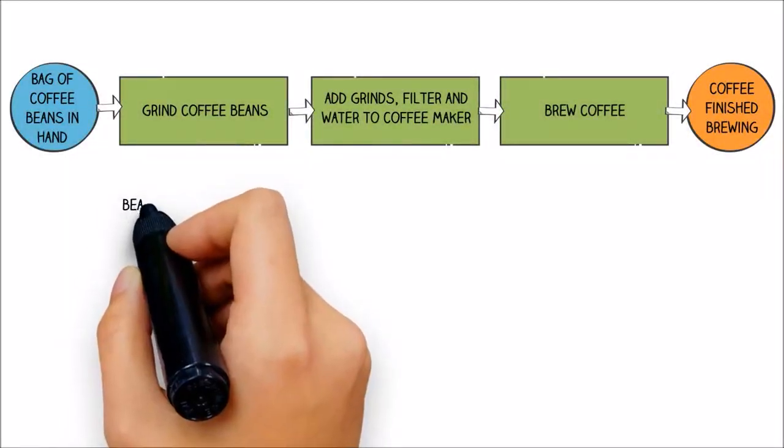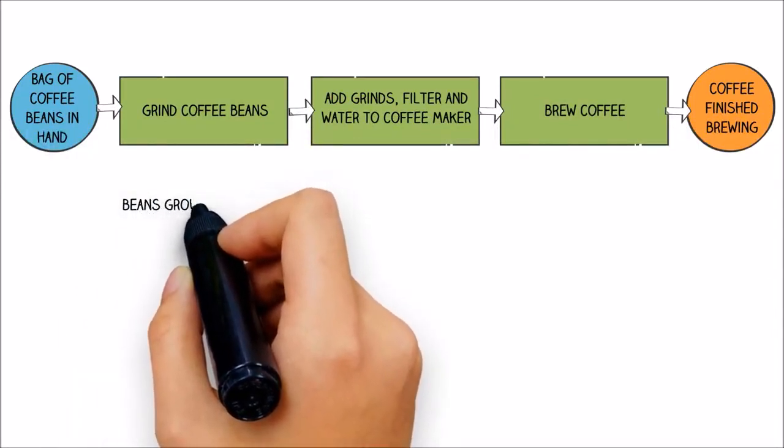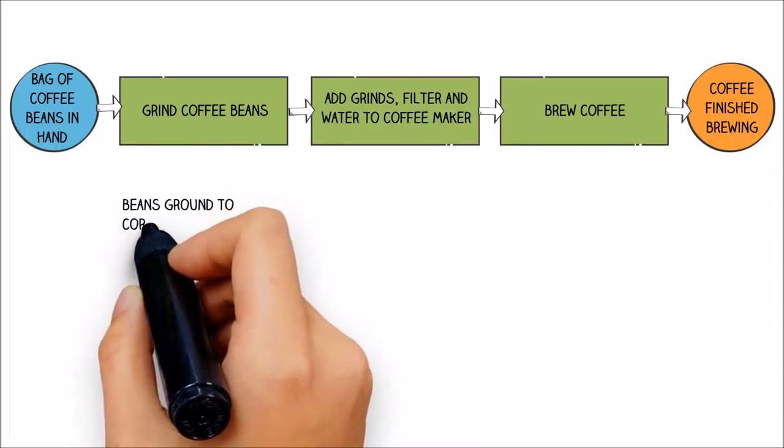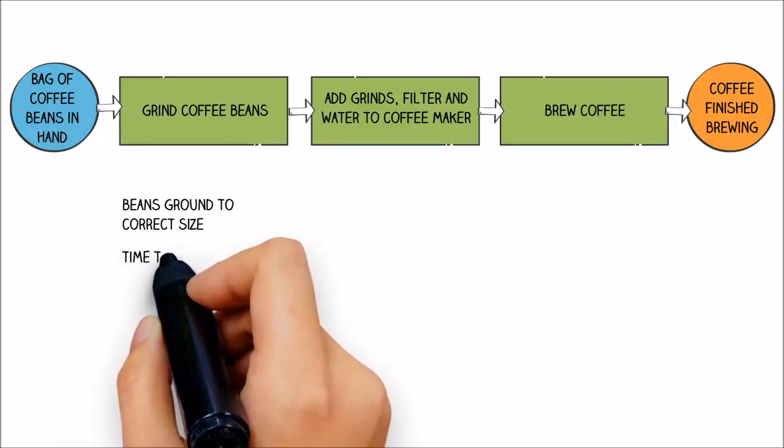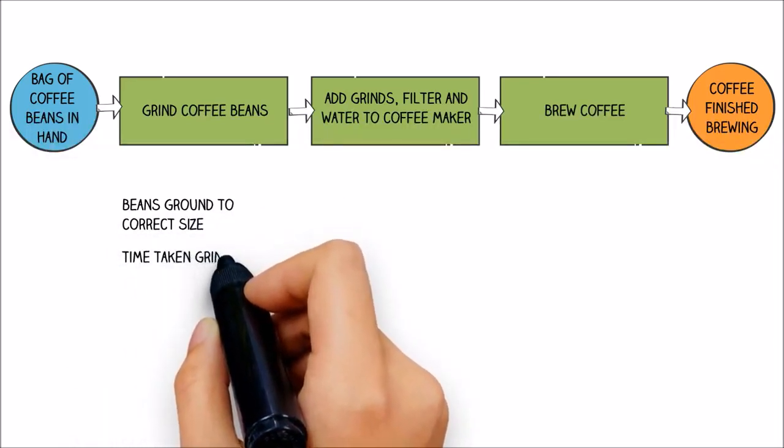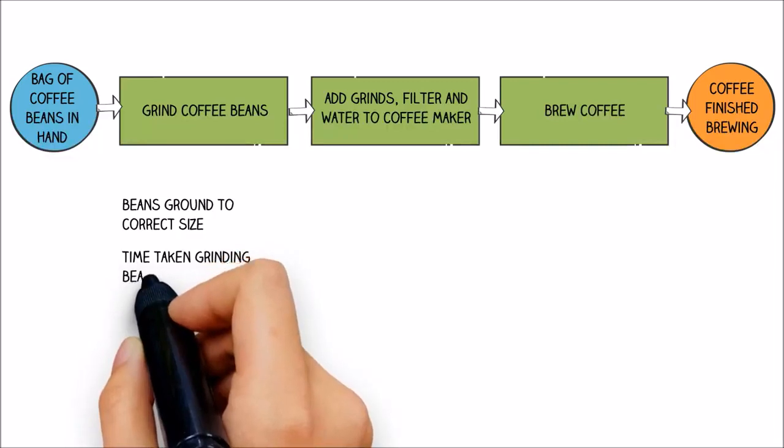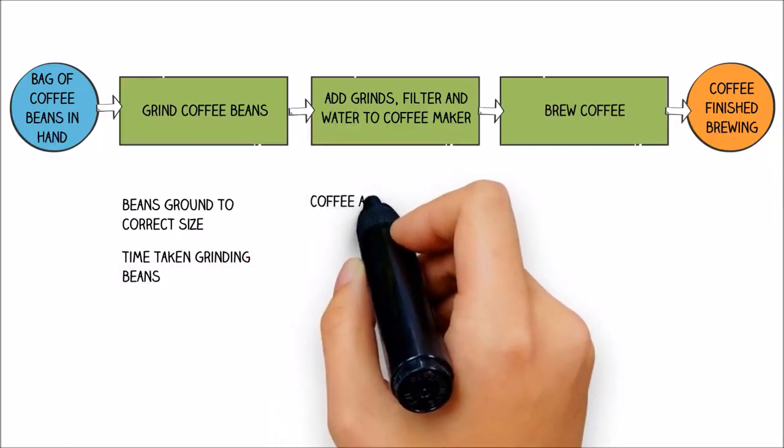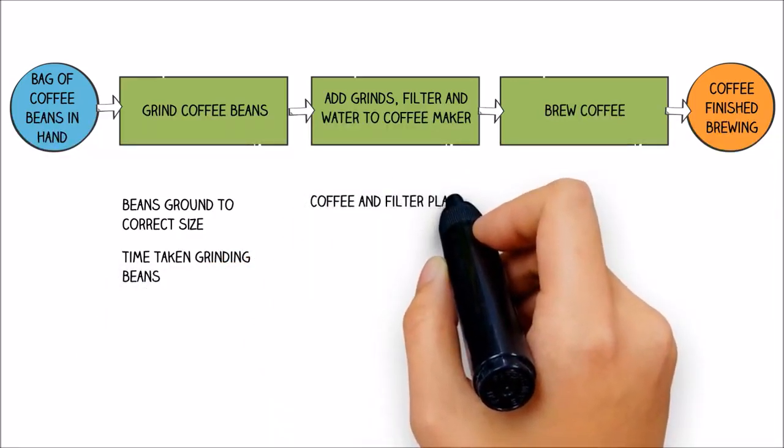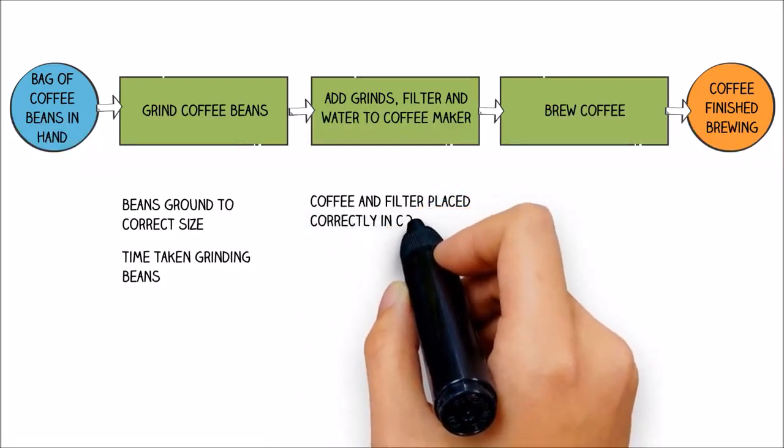Going back to our example, the step of grinding coffee beans results in beans being ground to the proper size, and the time taken to actually grind the beans. The step of placing the ground coffee filter and water into the coffee maker results in the coffee and filter